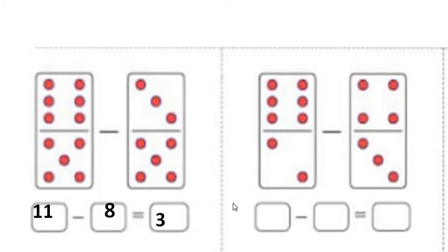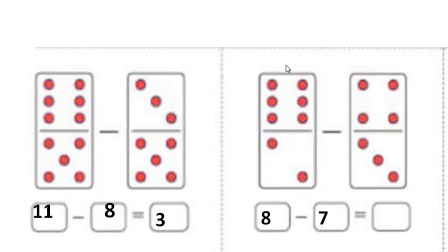Next, I have 8 dots. Out of that, I have to cut 7. So I reduce 7 from number 8. How many numbers will remain? If I reduce 7 from 8, there will remain 1 dot only, which we write in the box.